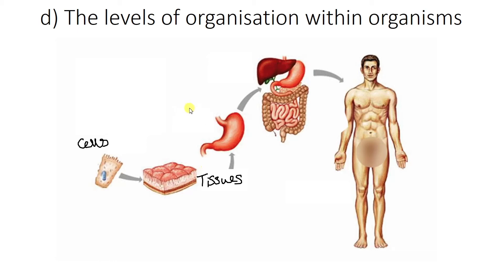Tissues then make up organs such as your heart, your kidneys, or this one here is the stomach. And then your organs are arranged into organ systems. Just like you learn about the digestive system and the respiratory system — they're all different types of systems. This one here is the digestive system.